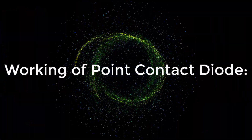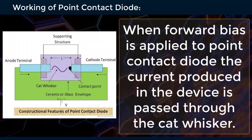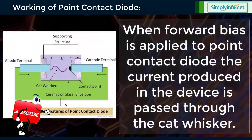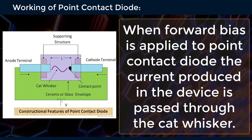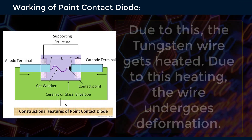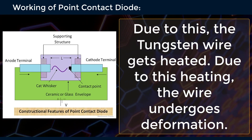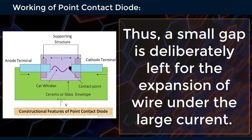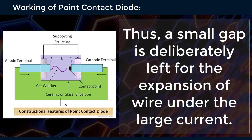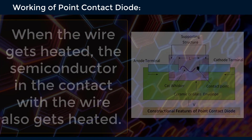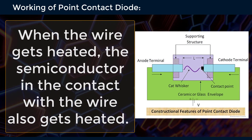Now let's look into how point contact diode works. When forward bias is applied, the current produced in the device passes through the catwhisker. Due to this, the tungsten wire gets heated and undergoes deformation. Thus, a small gap is deliberately left for the expansion of the wire under large current. When the wire gets heated, the semiconductor in contact with the wire also gets heated.